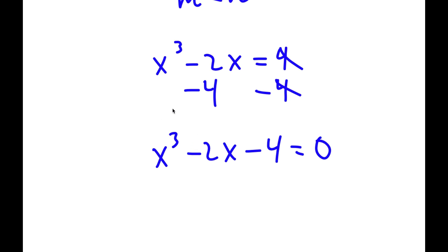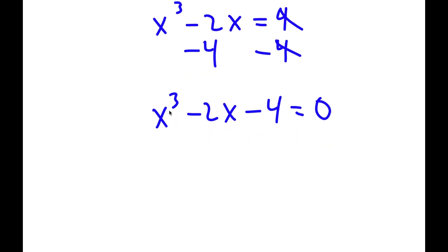Now I'm going to start by checking a solution. Let's first try x equals 1. If I plug in 1, I get 1 to the power of 3 minus 2 times 1, which is minus 2. 1 minus 2 is negative 1, and negative 1 minus 4 is negative 5, so that doesn't work.